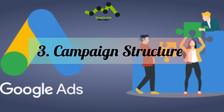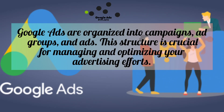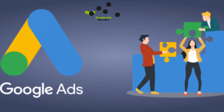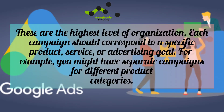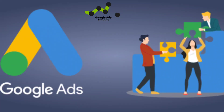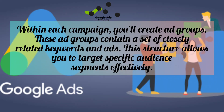Number three: Campaign Structure. Google Ads are organized into campaigns, ad groups, and ads. This structure is crucial for managing and optimizing your advertising efforts. Campaigns are the highest level of organization — each campaign should correspond to a specific product, service, or advertising goal. For example, you might have separate campaigns for different product categories. Within each campaign, you will create ad groups, which contain a set of closely related keywords and ads, allowing you to target specific audience segments effectively.